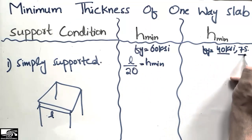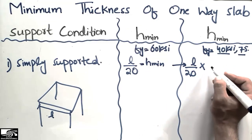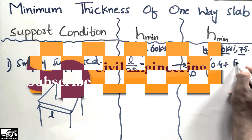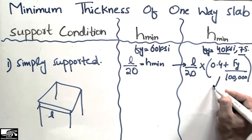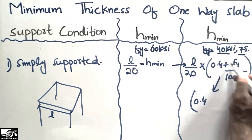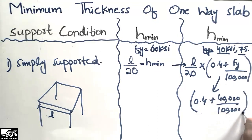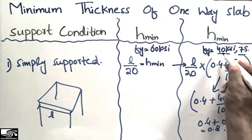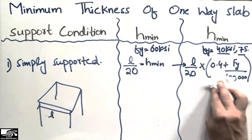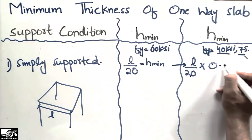For fy equal to 40 ksi or other grades of steel, the minimum depth is l/20 multiplied by a factor. That factor is 0.4 plus fy divided by 100,000. In the case of grade 40 steel: 0.4 plus 40,000 divided by 100,000 gives 0.8. So for grade 40 steel, multiply l/20 by 0.8 to get the minimum thickness.